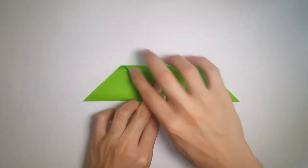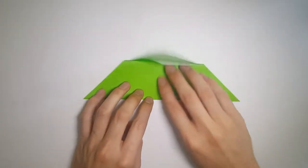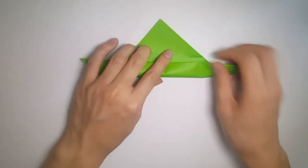Now from the bottom part of the triangle, we're going to fold it up to the halfway line, to the creases we just made.